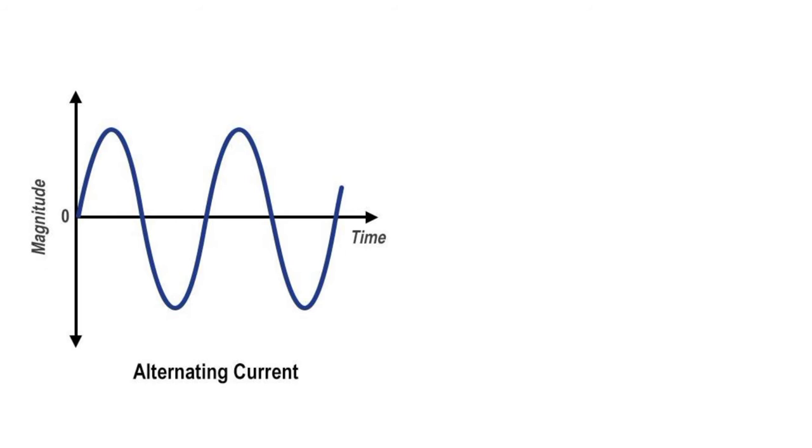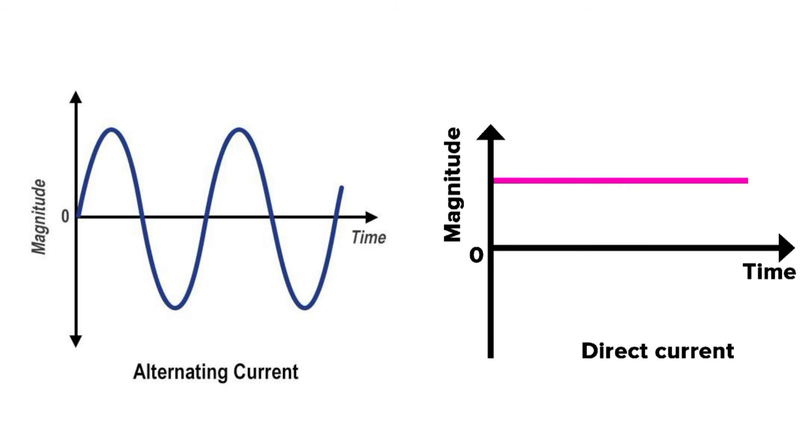So what is AC and what is DC? In case of alternating current, the current direction changes periodically - you can see in the image also. In case of DC, the direction of current doesn't change; it remains constant.